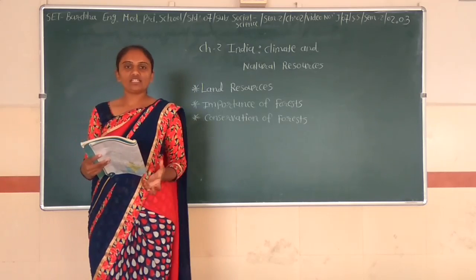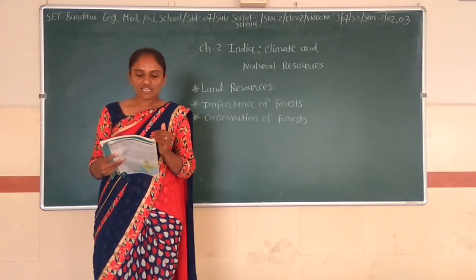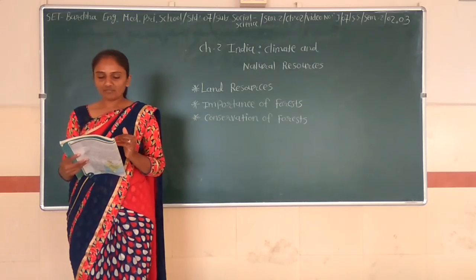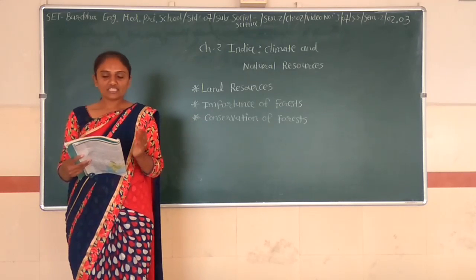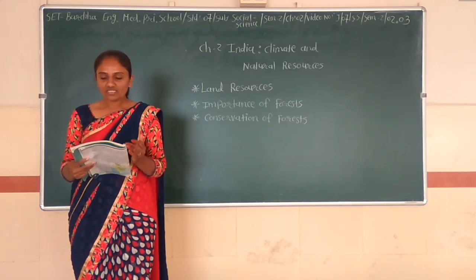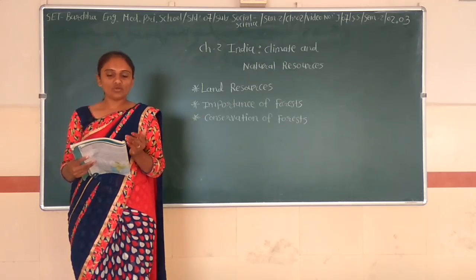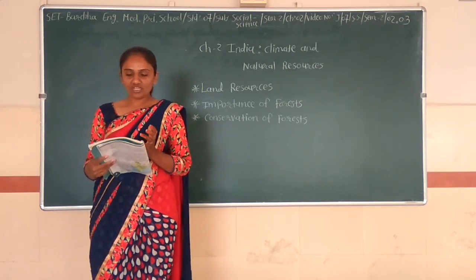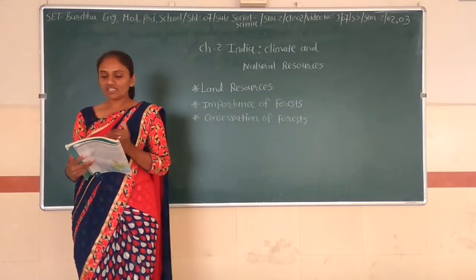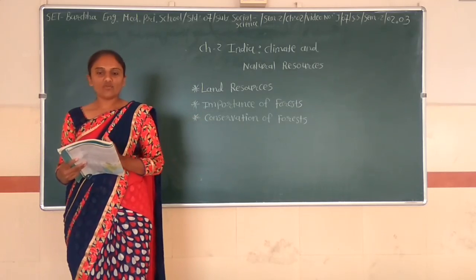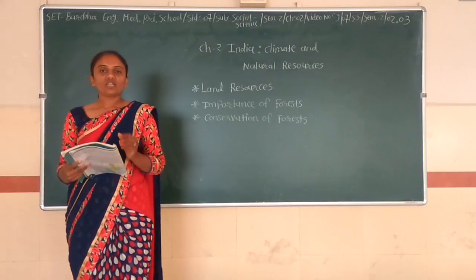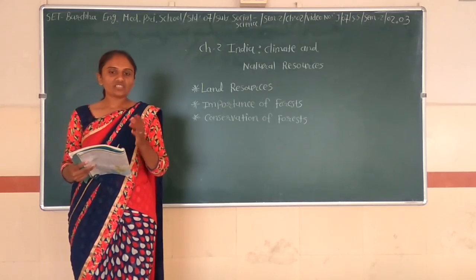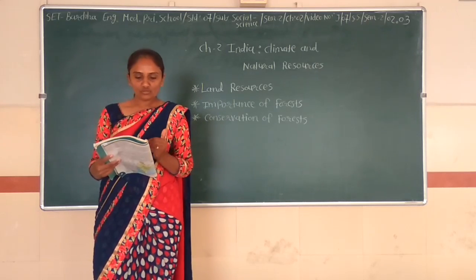Paper pulp is made from deodar trees, and turpentine is made from pine trees. Tea boxes, matchsticks, sports instruments, artificial fibers, and filaments are also made from deodar and jade trees. Cellulose is used for making rayon; these products from forest trees are of great importance to human life.